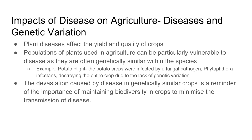An example of this is potato blight, where potato crops were infected by a fungal pathogen, Phytophthora infestans, and it destroyed the entire crop due to the lack of genetic variation. The devastation caused by these diseases in genetically similar crops reminds us, farmers, and anyone in the agricultural industry about the importance of maintaining biodiversity in our crops, as it minimizes the transmission of disease.